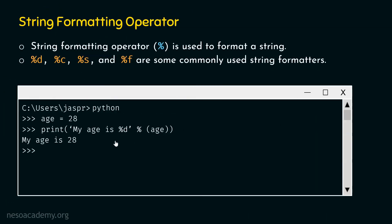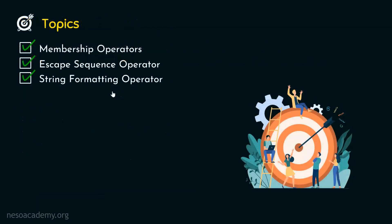I hope this concept is clear. In this way, we can include a floating point value, a string, or a character from an external source in our string. We are done with the string formatting operator as well. Thank you for watching this presentation — I'll see you in the next one.